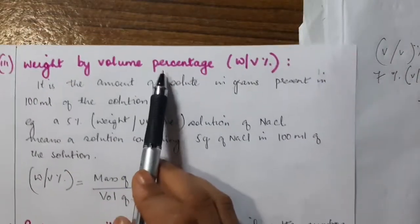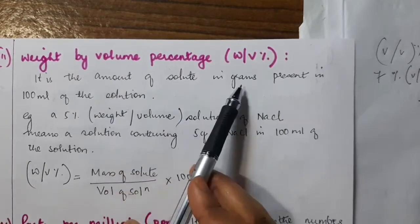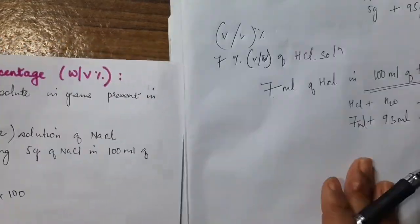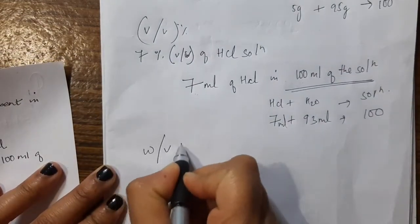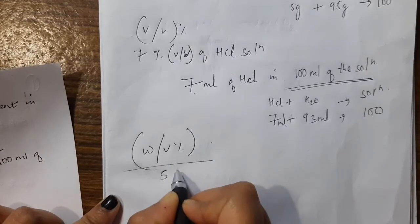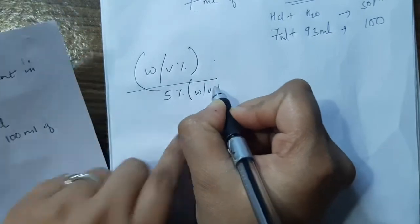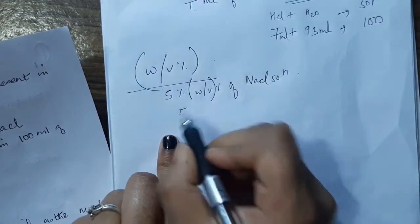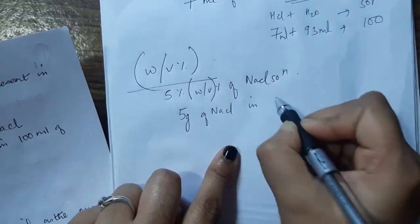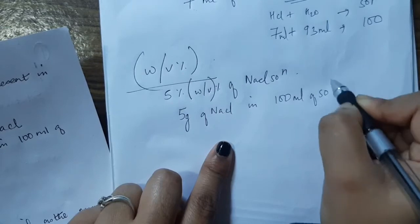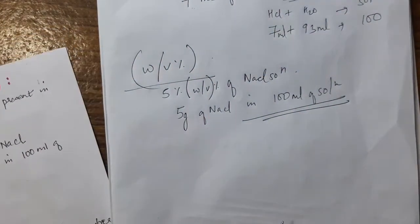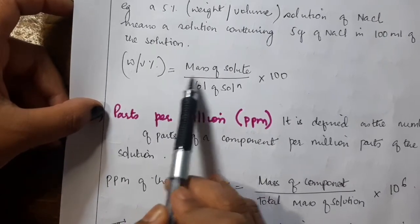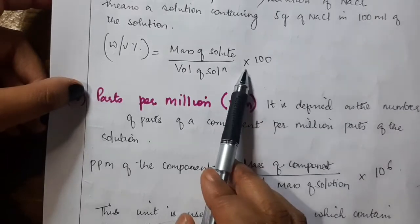The next concentration term is weight by volume percentage, W/V%. This means the amount of solute in grams present in 100 mL of solution. For example, 5% W/V of NaCl means 5 grams of NaCl in 100 mL of solution. The formula is: W/V% = (mass of solute / volume of solution) × 100.